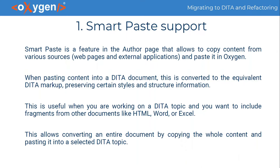Smart paste is a feature implemented in the Author mode that allows you to copy content from various sources — including web pages and external applications such as Office-type applications — and paste it into Oxygen. When pasting content into a DITA document, it is converted to the equivalent DITA markup, preserving certain styles and structure information. For example, if you copy content that includes multiple paragraphs and paste it in Author mode, the multiple paragraph structure is preserved. This also supports pasting in other document types like TEI, DocBook, JATS, and XHTML, but today we will focus only on migration to DITA.